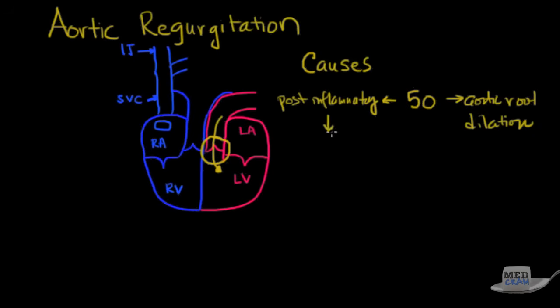Specifically post-inflammatory, the type of things that you want to think about are rheumatic heart disease or RHD, infectious endocarditis, think about syphilis. And then in terms of aortic root dilatation think about age-related or the other one to think about is Marfan's.